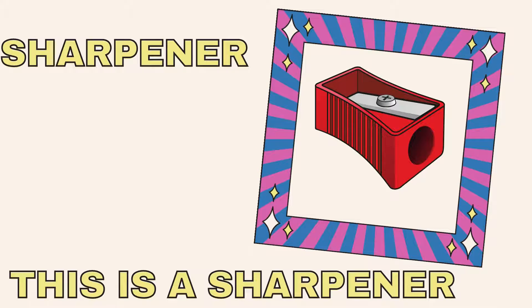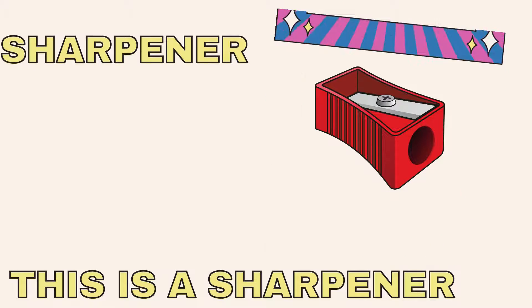The next one: sharpener — it's a sharpener, this is a sharpener. What is the color? It's red — sharpener.